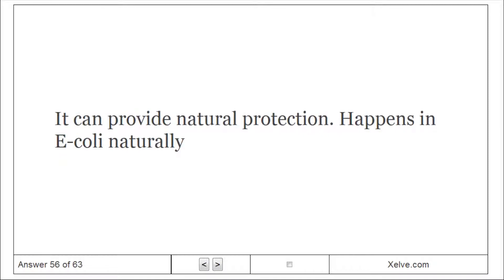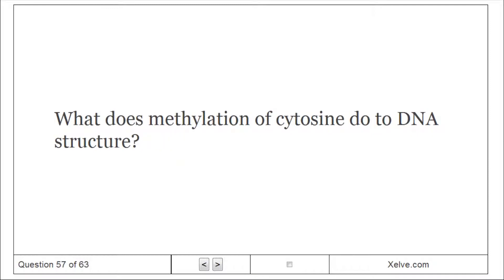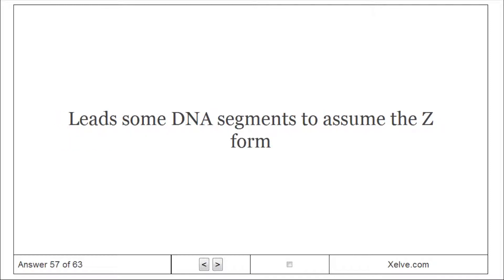What is the purpose of DNA methylation? It can provide natural protection against restriction enzymes; this occurs naturally in E. coli. What does methylation of cytosine do to DNA structure? It can lead some DNA segments to assume the Z-form.